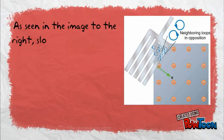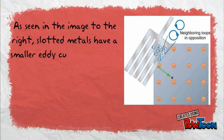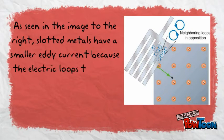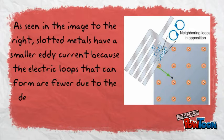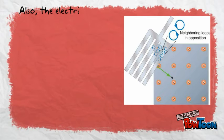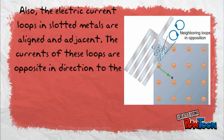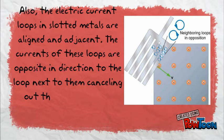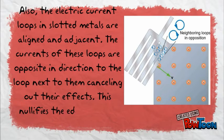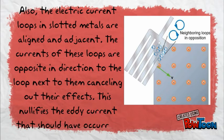As seen in the image to the right, slotted metals have a smaller eddy current because the electric loops that can form are fewer due to the decrease in surface area. Also, the electric current loops in slotted metals are aligned and adjacent. The currents of these loops are opposite in direction to the loops next to them, cancelling out their effects. This nullifies the eddy current that should have occurred.